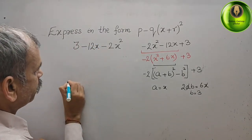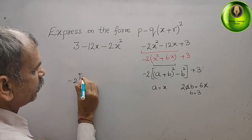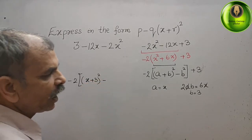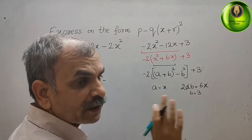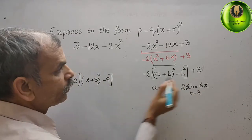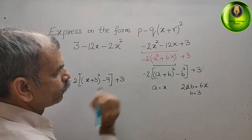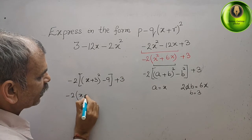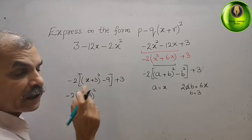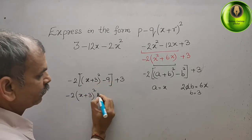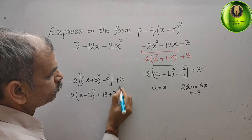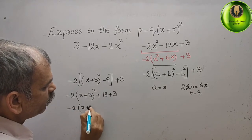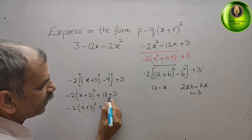So now we write: minus 2 times (x plus 3) whole square, minus b square. b square is 3 squared which is 9, so minus 9, plus 3. Now multiplying with minus 2 we get: minus 2 times (x plus 3) whole square. Minus into minus is plus, 2 times 9 is 18. So plus 18, plus 3 gives 21.